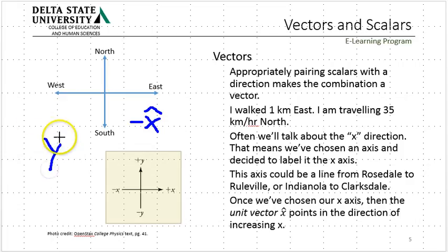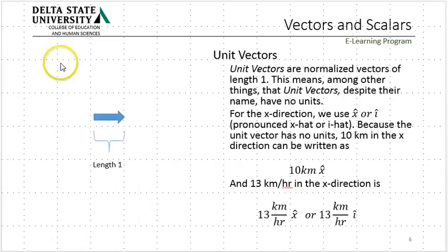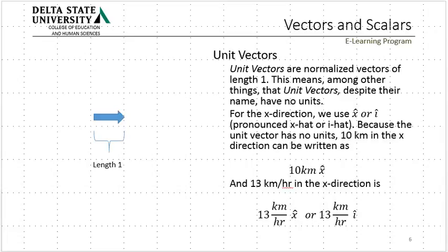Y hat is a unit vector in the positive y direction. Unit vectors are vectors with a length of 1 — that's why they're called unit vectors. The reason we use them is because that makes our life easier: I don't need a separate vector for 30 miles east. All I need is the unit vector in the eastern direction and put 30 miles — or 30 kilometers — into that unit vector.